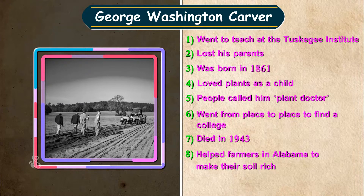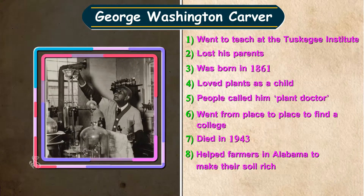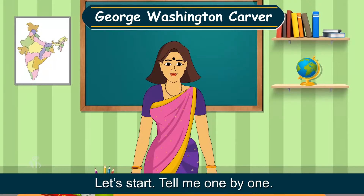Seven — died in 1943; eight — helped farmers in Alabama to make their soil rich; nine — found many uses of peanuts and sweet potatoes. Let's start — tell me one by one.